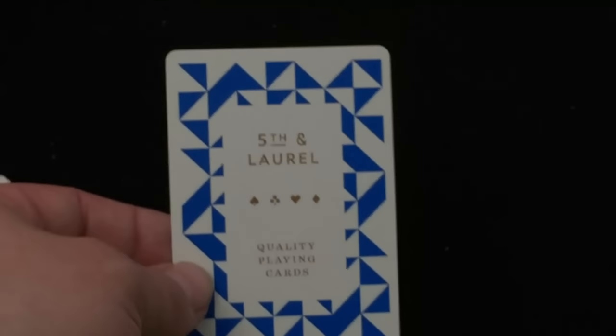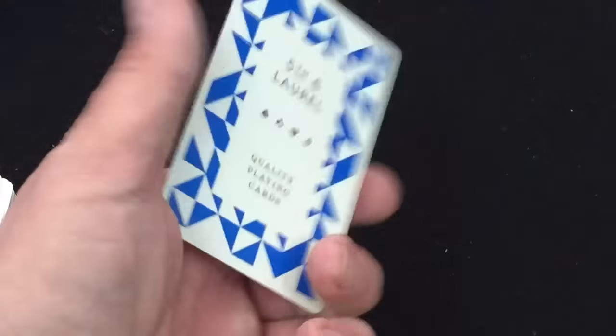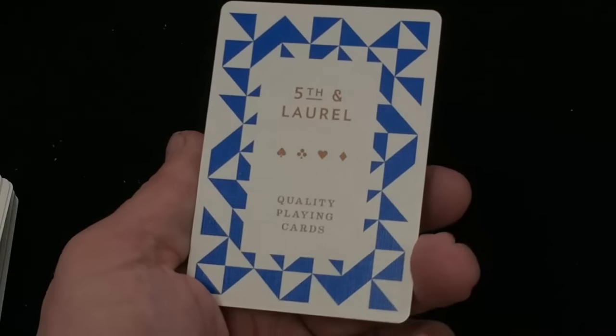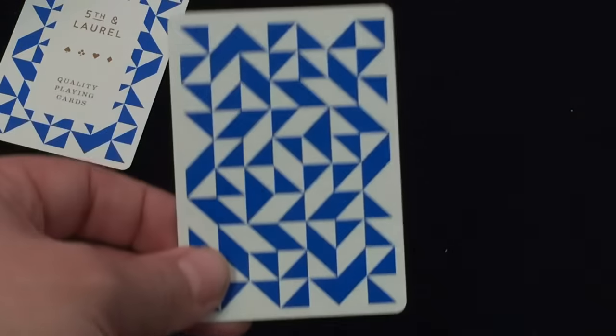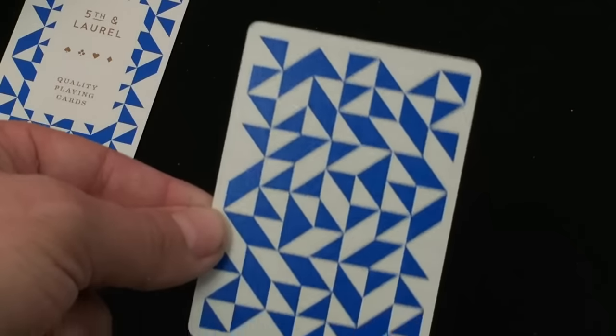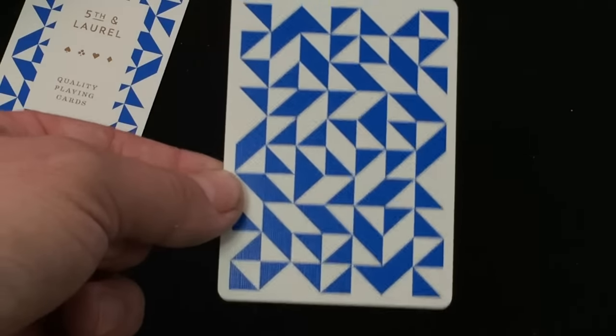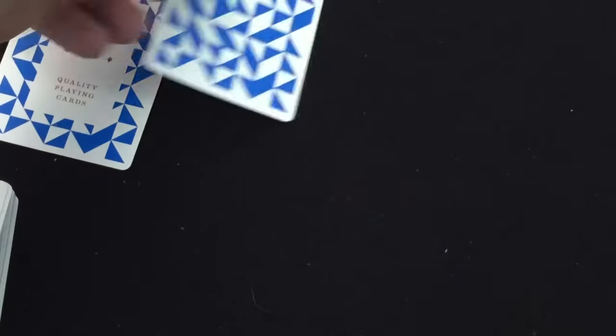You did get an ad card, it says Fifth and Laurel quality playing cards with the four suits, the other side is the same. You did get a double backer as well. Very nice pattern for a back design. The border is pretty thin, pretty even, maybe a little bit thick on one end but nothing major.